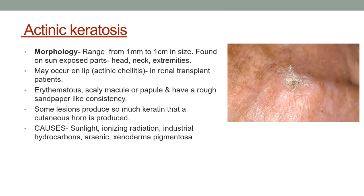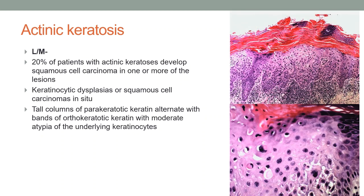Actinic keratosis lesions range from a few millimeters to one centimeter in size, predominantly seen in sun-exposed parts. They may occur on the lip in renal transplant patients — referred to as actinic cheilitis. Clinically it is an erythematous scaly macule or papule with a rough sandpaper-like consistency. Some lesions produce enough keratin to form a cutaneous horn. Causes include sunlight, ionizing radiation, industrial hydrocarbons, arsenic and xeroderma pigmentosum.